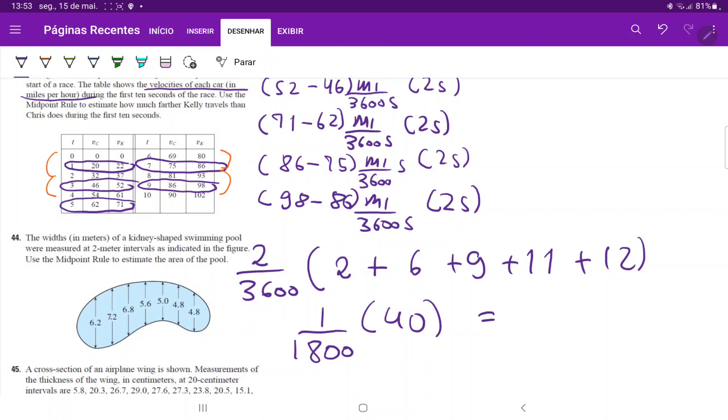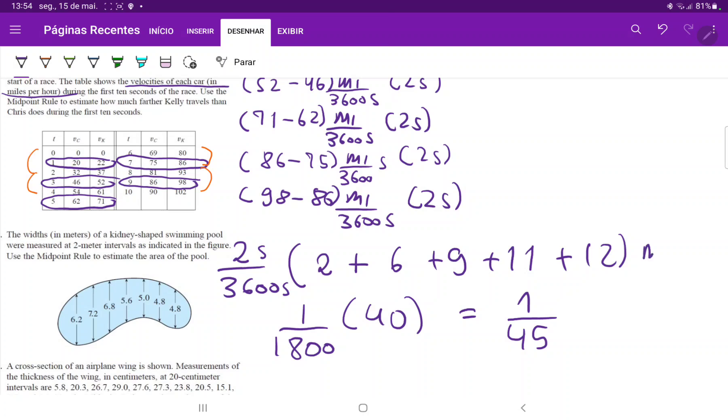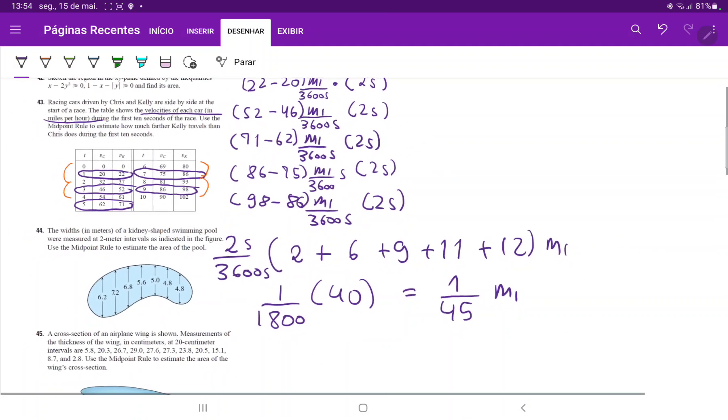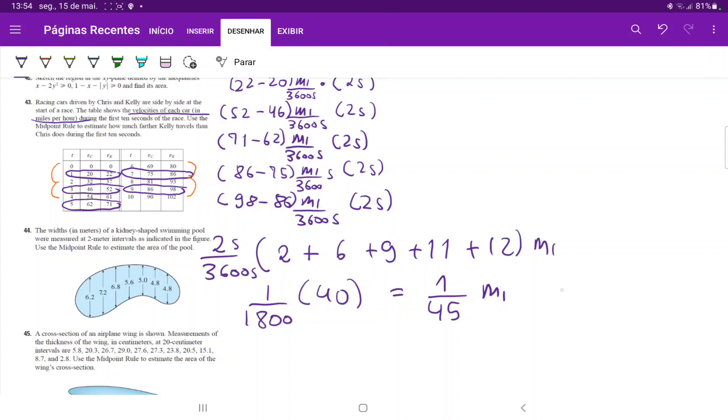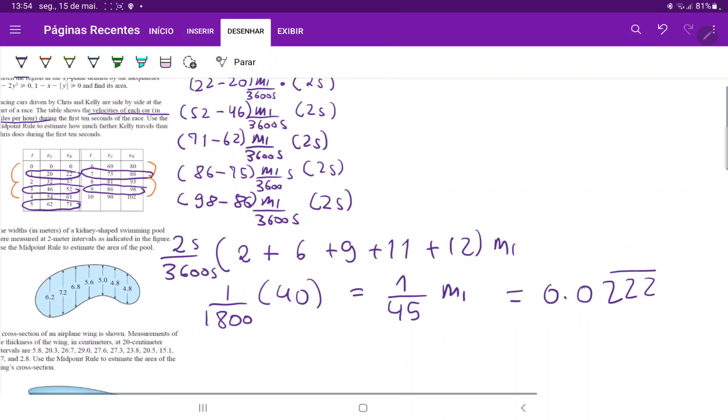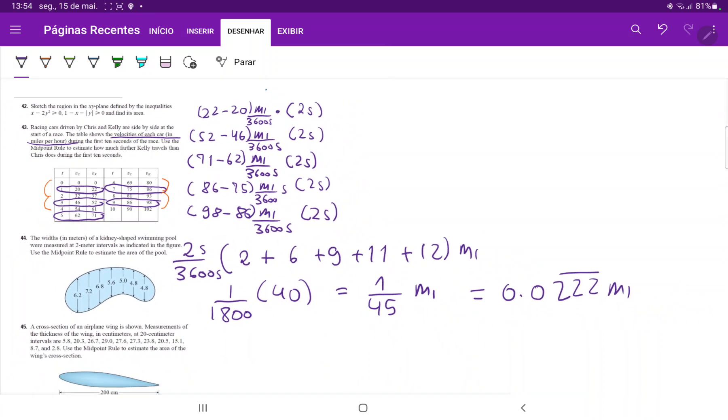So this is 1 over 1,800 times 2 plus 6 plus 9 plus 11 plus 12, times 40, which gives us 40 over 1,800, which gives us 1 over 45. And I can't forget my units. So this is 2 seconds times 3,600 seconds, so the seconds cancel out. These units that we're summing up are the miles, because we factor out the seconds. So all we have here is 1 over 45 miles, or this is also equal to 0.0222 miles, and that is the difference in distance between Kelly and Chris during the first 10 seconds.